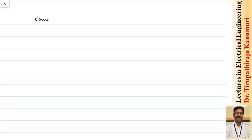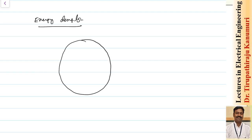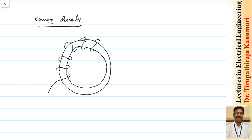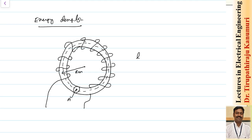Now let us see the energy density. Consider a toroid coil — a toroid is a solenoid wound in circular form. Assume the mean radius is rm, the cross-sectional area is a, and the mean free length that the flux travels is lm = 2π·rm.